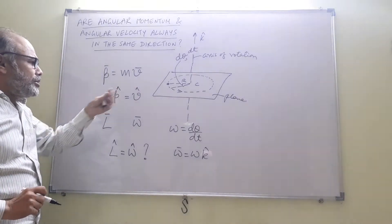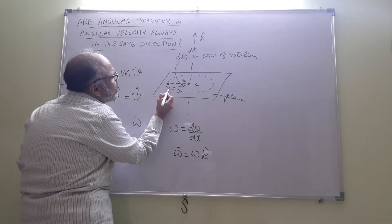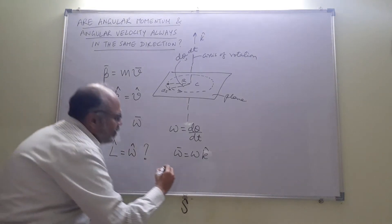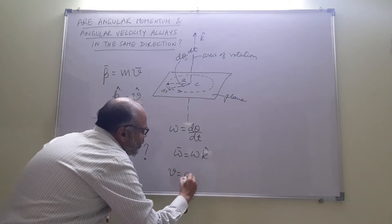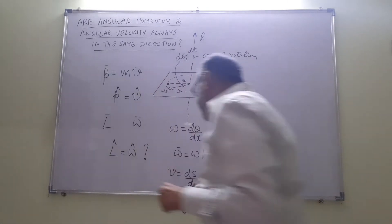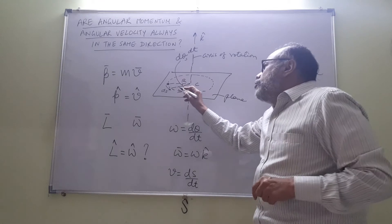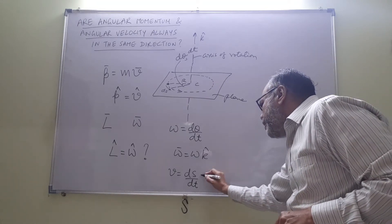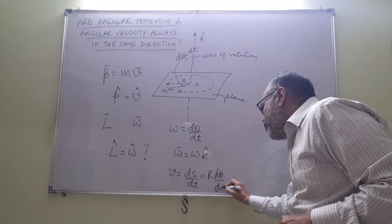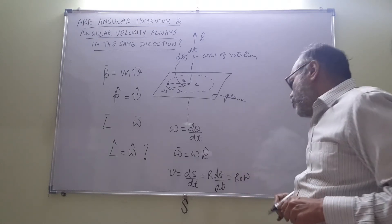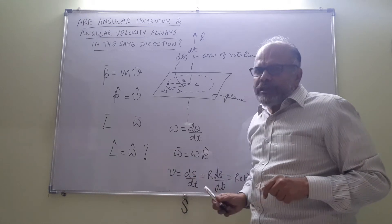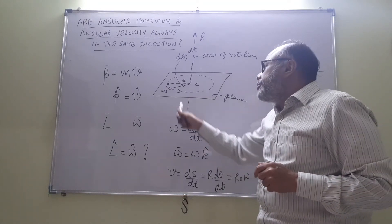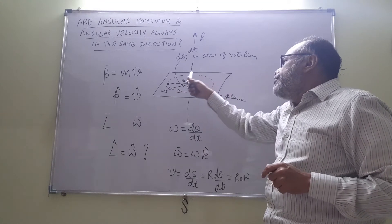Let us also see another important relation in circular motion. If the arc turned is ds, the linear velocity v would be ds/dt. Since ds = r·dθ, we get v = r·omega. The direction of v continuously changes and it is tangential at every point on the circle.